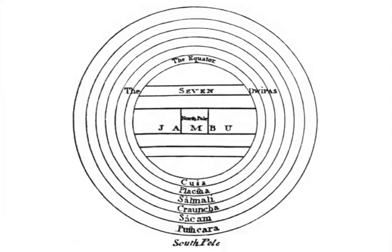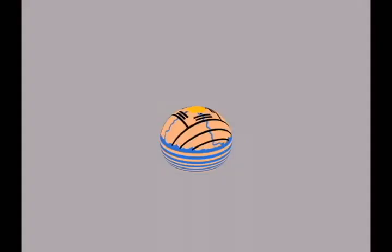In fact, this is commonly done in diagrams of Bhumandala, such as this one, dating to the early 19th century. Bhumandala with equalized rings can be seen as a stereographic projection of a spherical Earth.